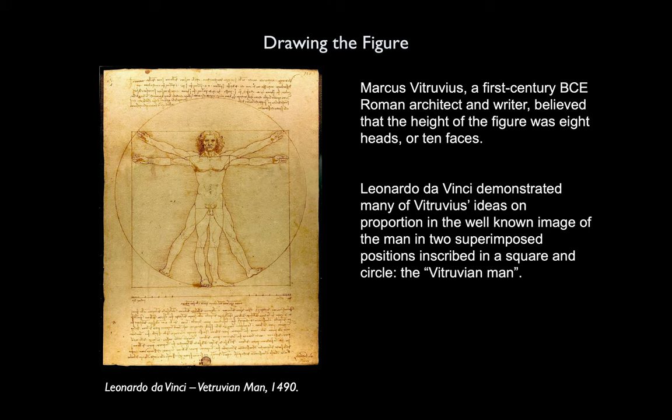Marcus Vitruvius was a first century BCE Roman architect and writer, and he believed that the height of the figure was eight heads or ten faces. As we know, Leonardo da Vinci demonstrated many of Vitruvius' ideas on proportion in the well-known image of the man in two superimposed positions inscribed in a square and in a circle. This is titled The Vitruvian Man.